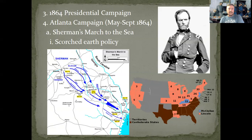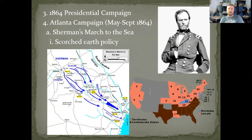Let's move on to the Atlanta Campaign, May to September of 1864 — one of the more famous offensives of the entire war. Sherman has taken over in the West and is going to march basically from Tennessee and invade Georgia. Specifically, they are heading towards a major supply depot in Atlanta, Georgia — very important for the South. They besieged the city and ultimately it fell on September 2nd of 1864.